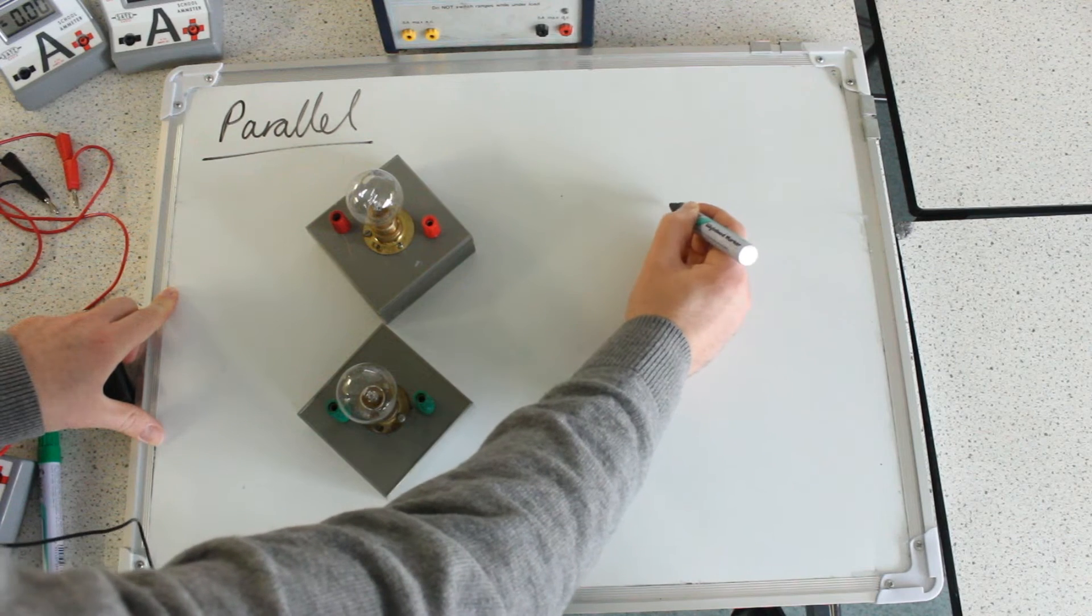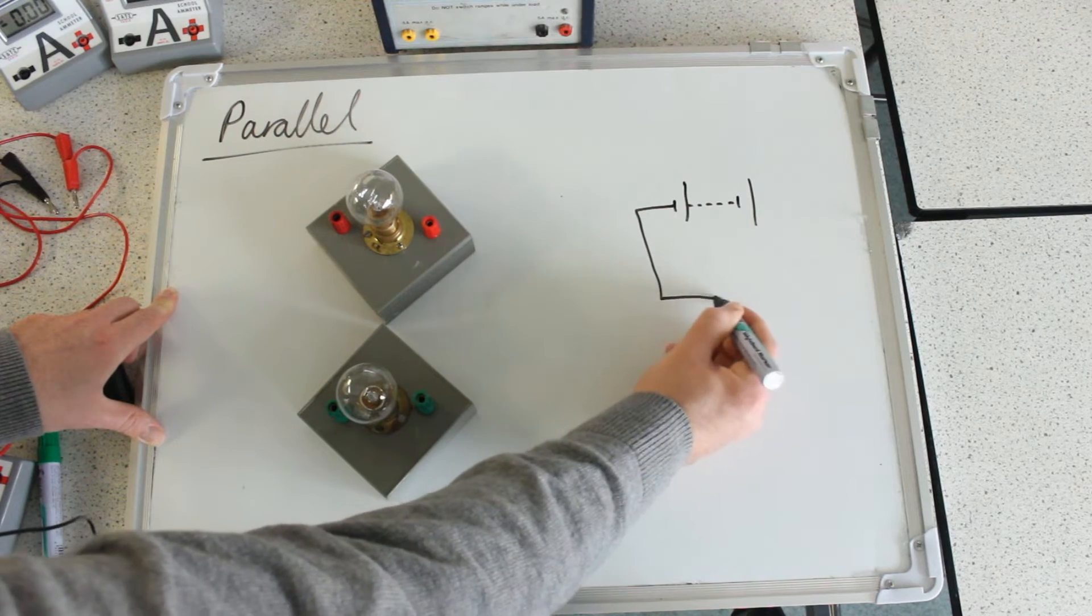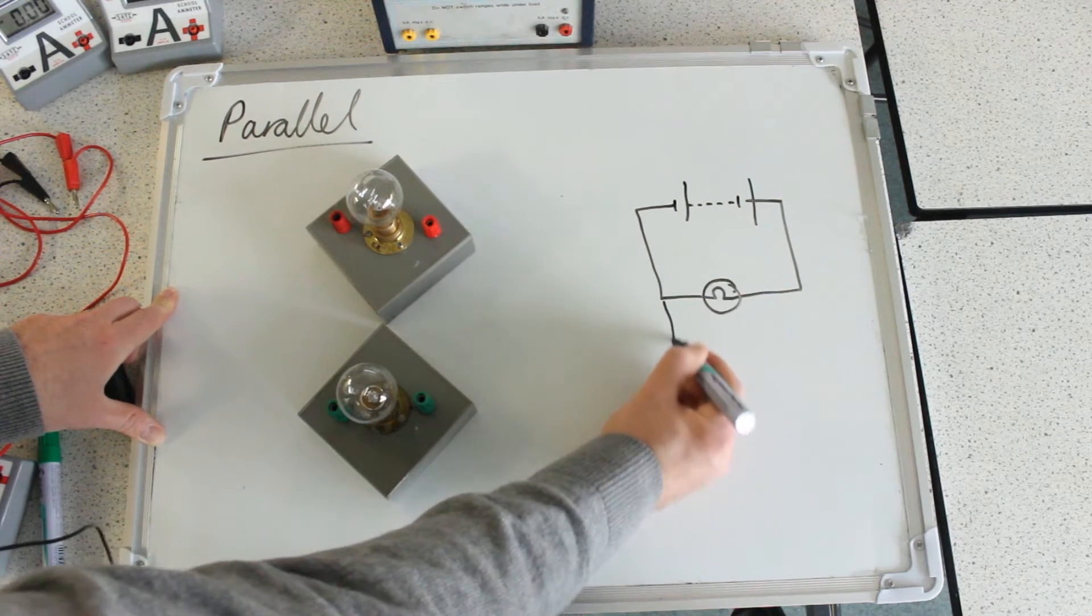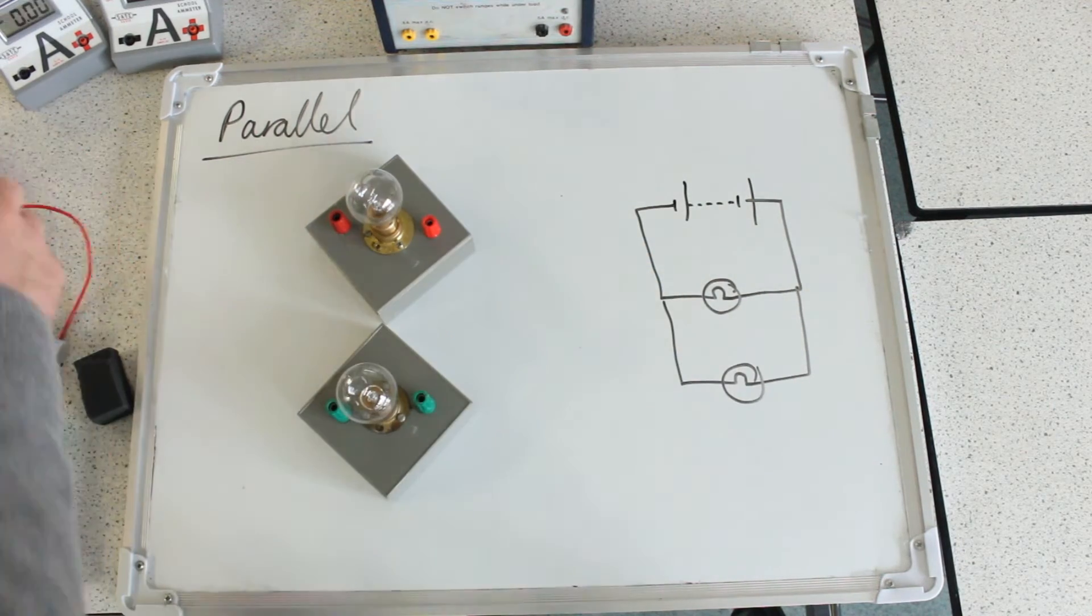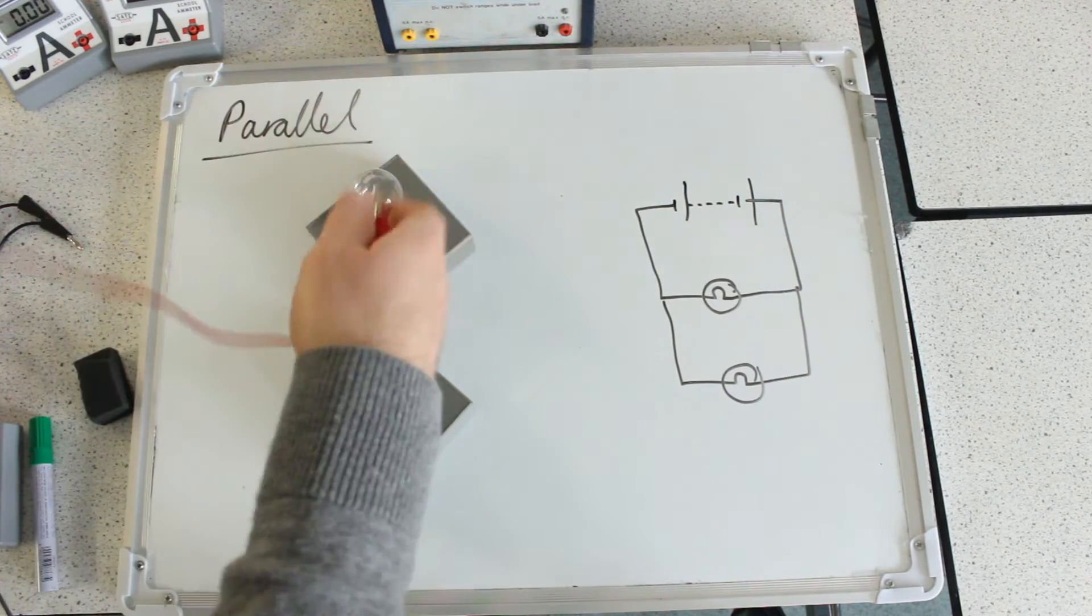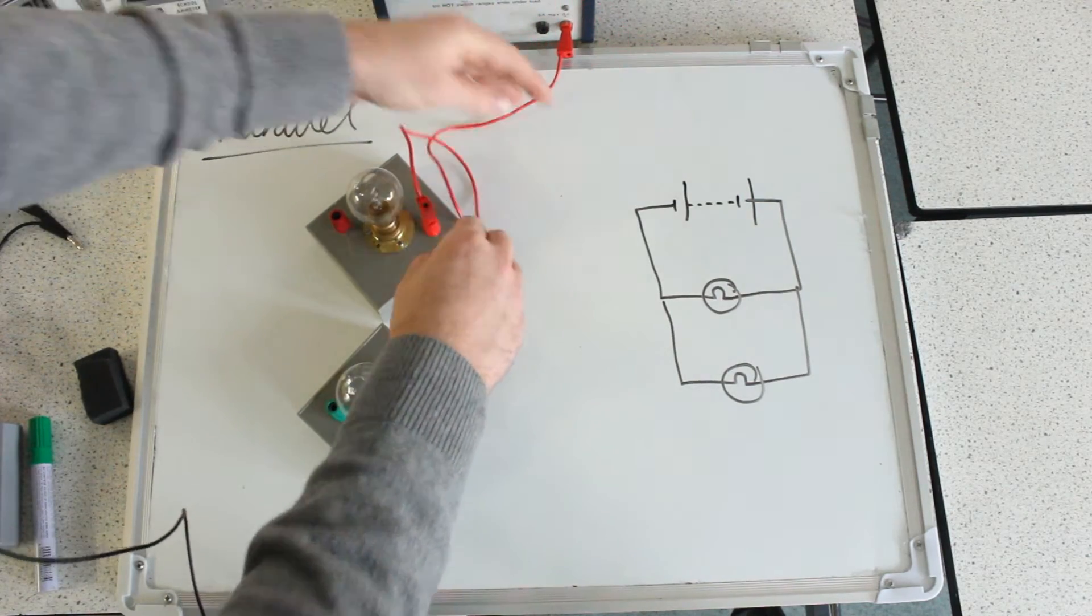So here's my power pack, here's my first bulb in the first parallel branch, and my second bulb. Then what I would normally do is work from one side around and use the different colours of wire to allow you to visualize the different sides of the circuit.